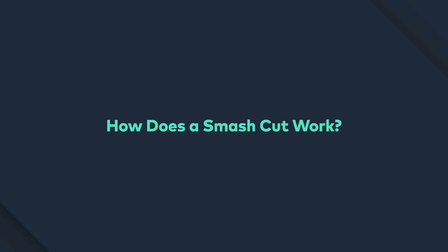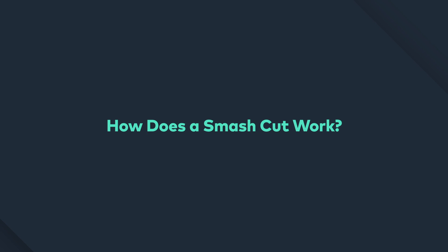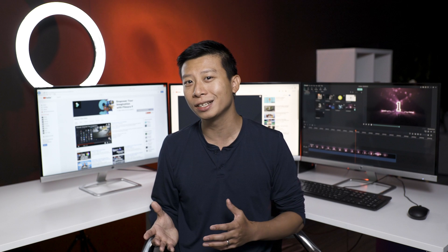So how does a smash cut work? An effective smash cut is all about playing with the audience's expectations. It's about going from a loud place to a quiet place, or saying something and then seeing something different. This type of cut, when done well, will wake your audience up or present irony in a way that will make them smile.